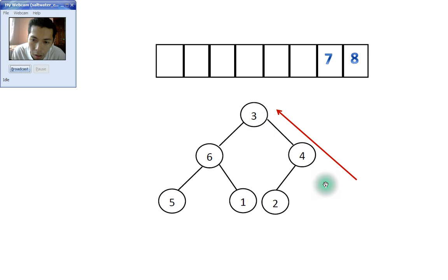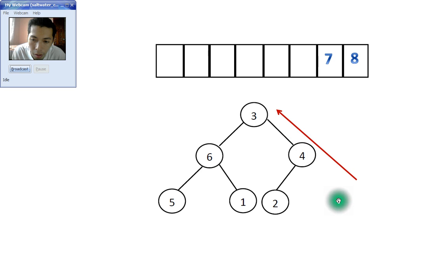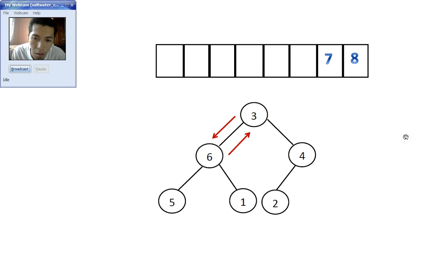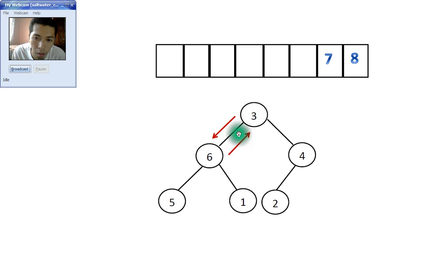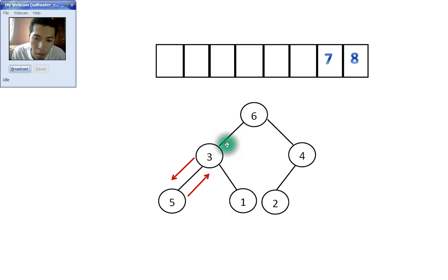Since there is no hanging node on the left side, the rule is to switch to the right side automatically if there is none left. So 3 will be placed there. Evaluating the left side again: 6 is greater than 5 and 1, and 3 is less than 6, so they switch places. Then switching the left side again: 3 is less than 5, so they switch places.